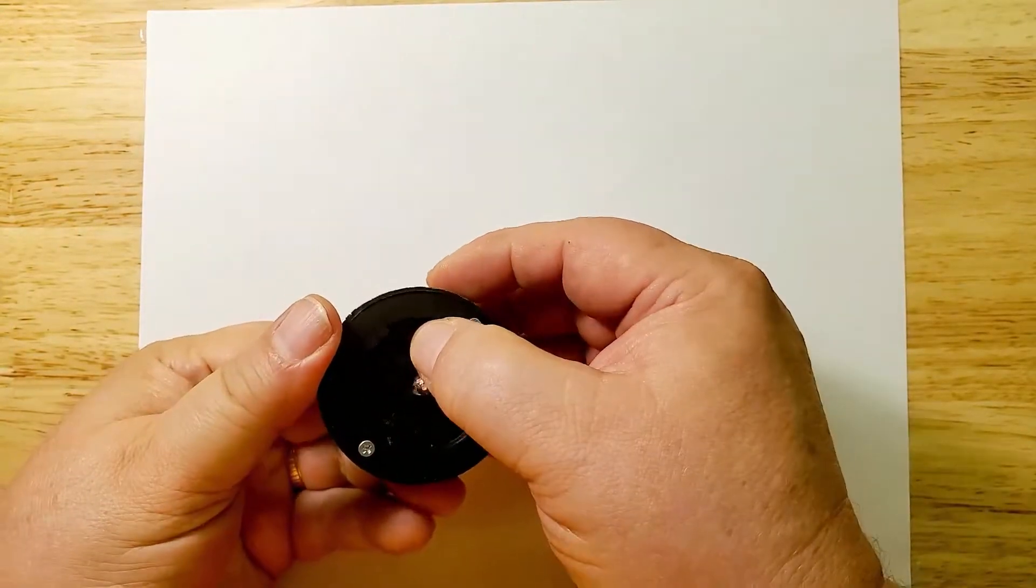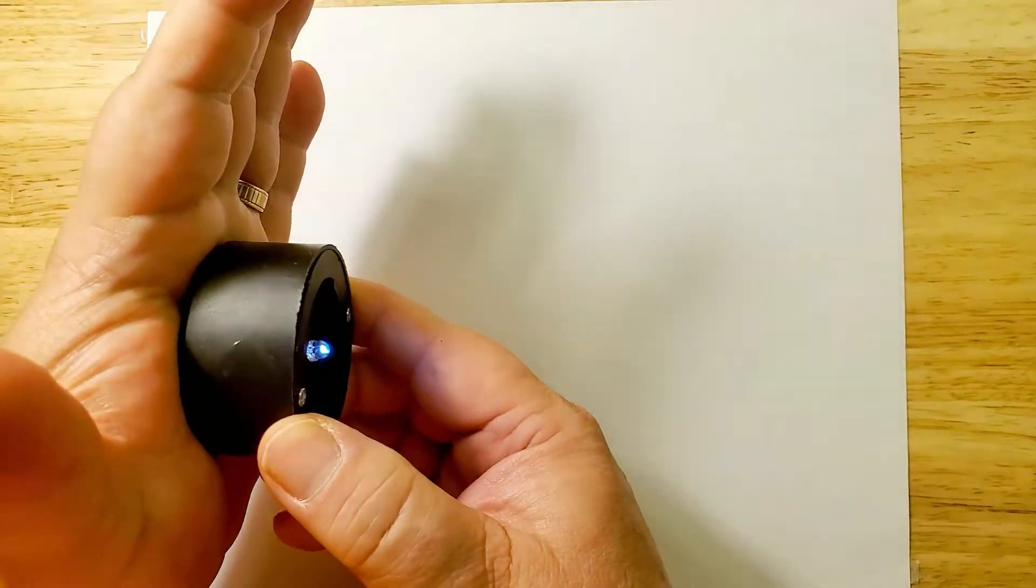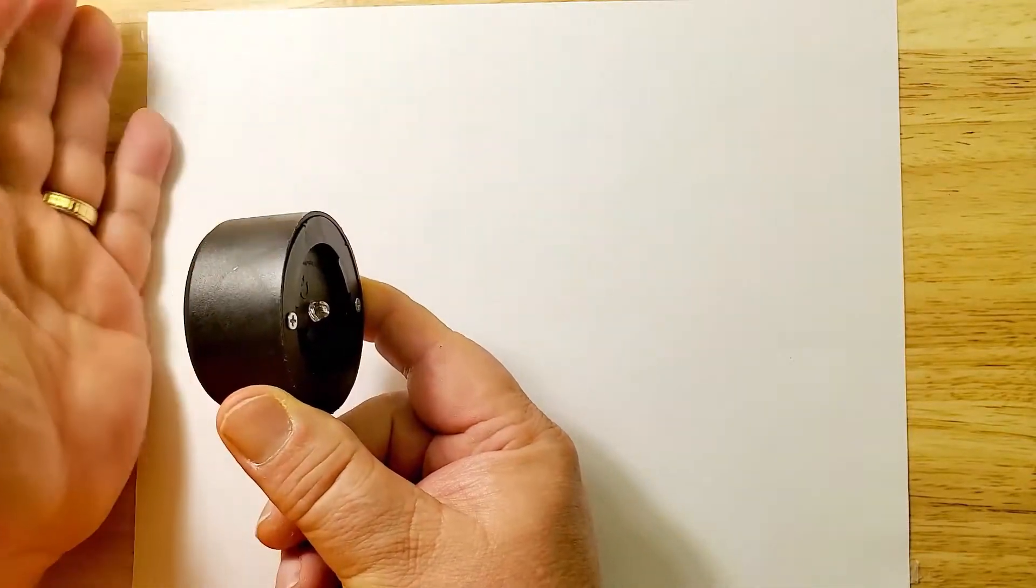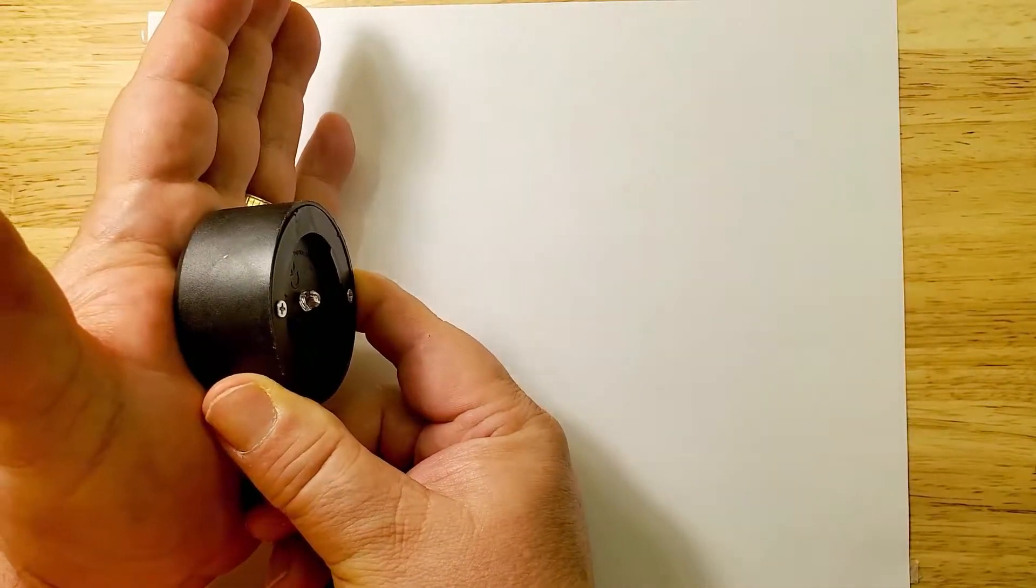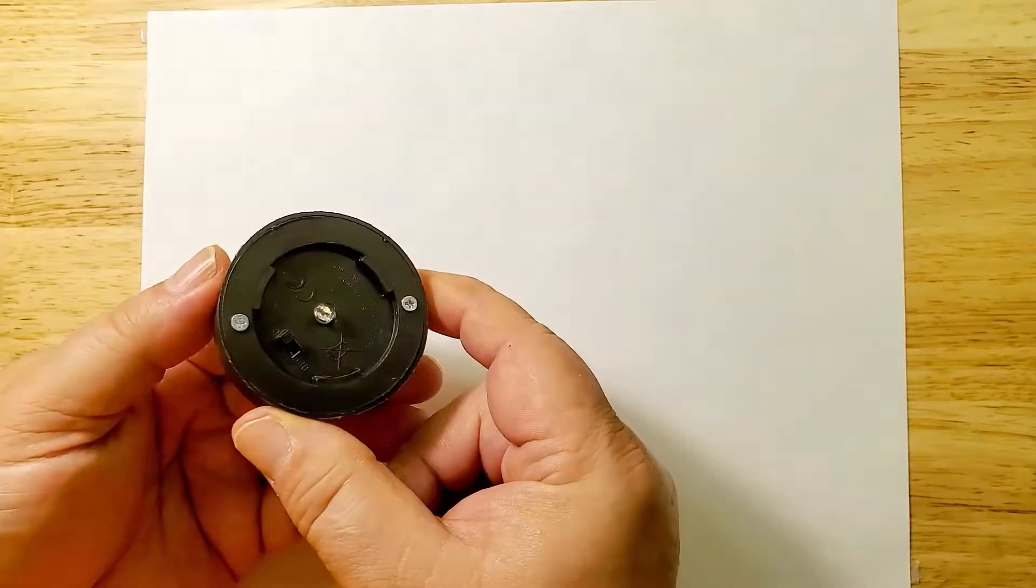The way these cheap solar lights work is when the sunlight is hitting the solar panel, it's charging the battery. When the sunlight goes away, it turns on the link between the battery and the LED.